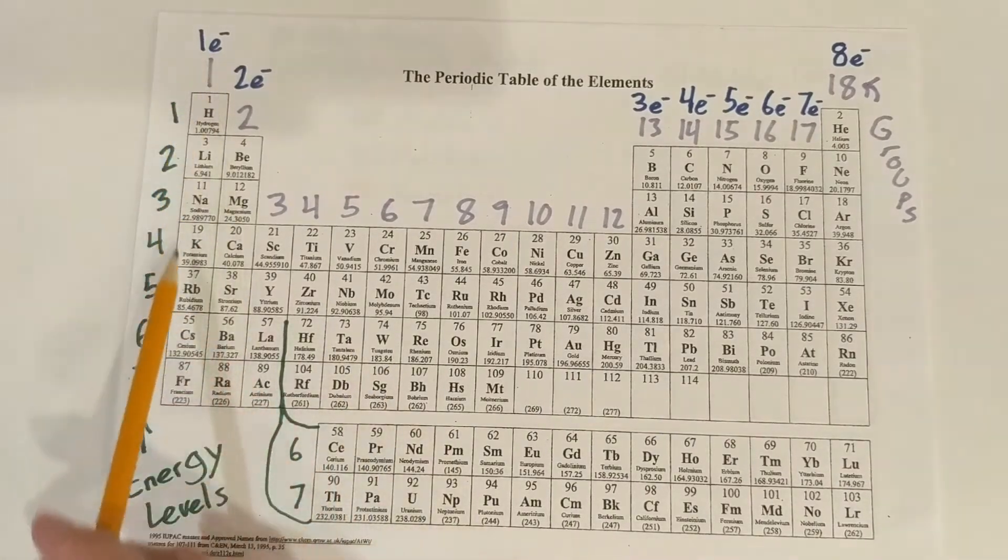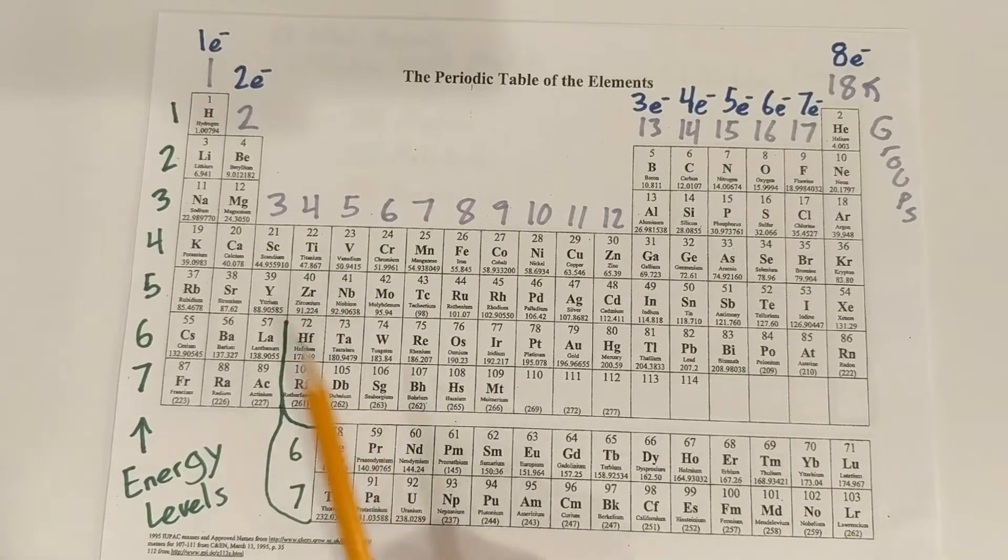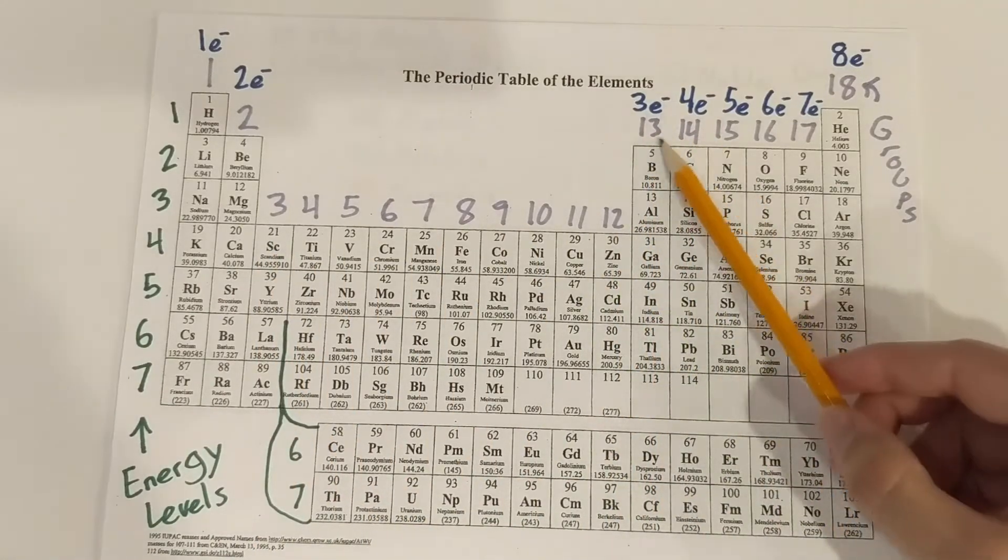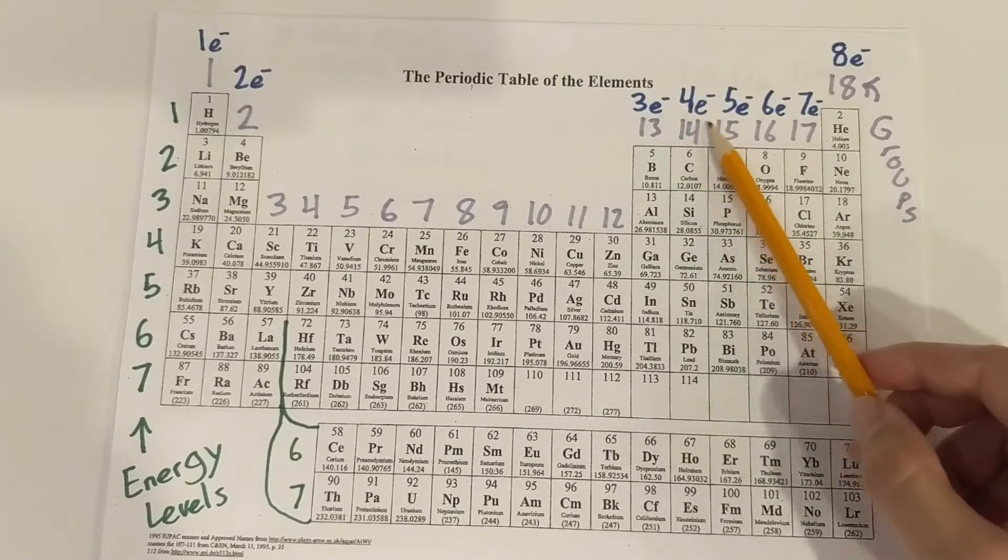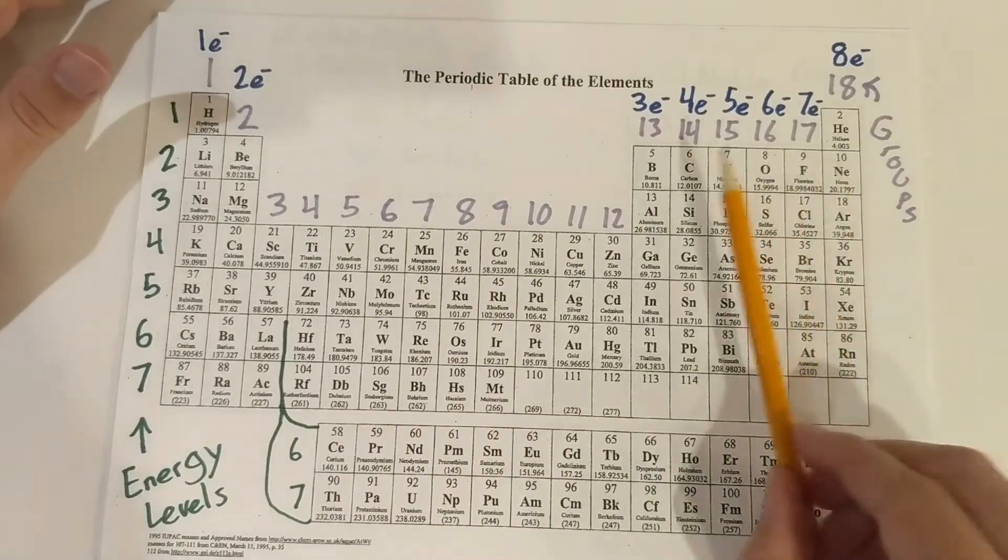So in group one, they would all have one valence electron. Group two would have two valence electrons. And then we skip our transition elements. And when we go to group 13, 14 would be three valence electrons. 14 would have four valence electrons. And as you move over, there would be one more valence electron each time you move over.